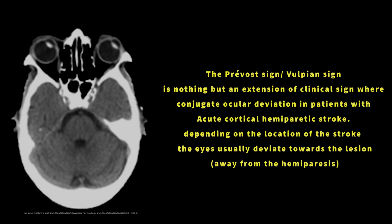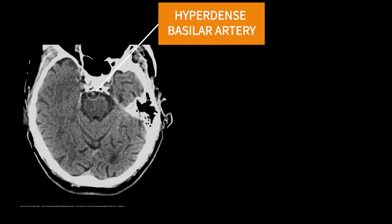Coming to the next sign — Provost sign or Vulpian sign — it is a conjugate eye deviation to the affected cerebral hemisphere in patients with acute ischemic stroke. That is, the conjugate eye deviation will be to the opposite side of the hemiparesis.